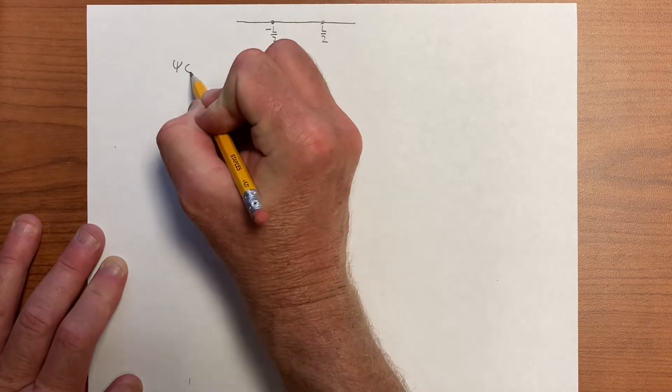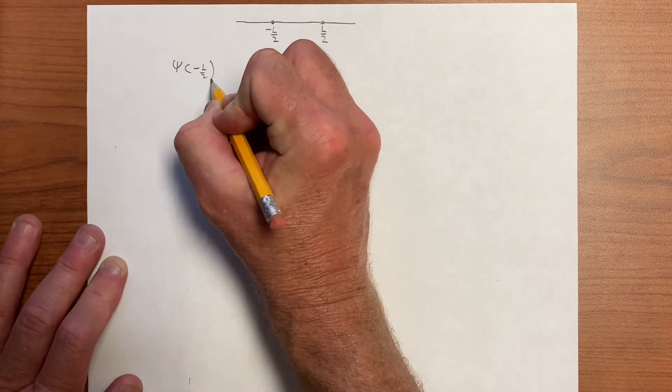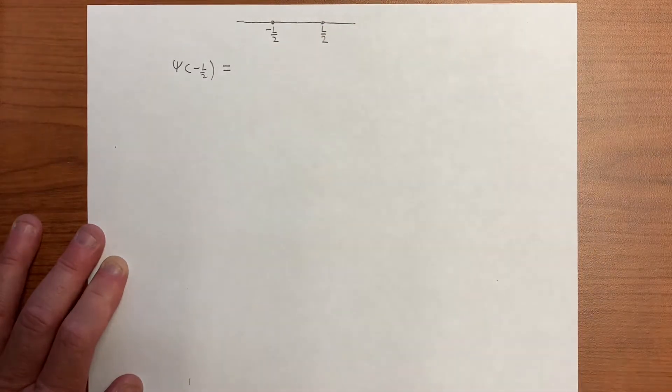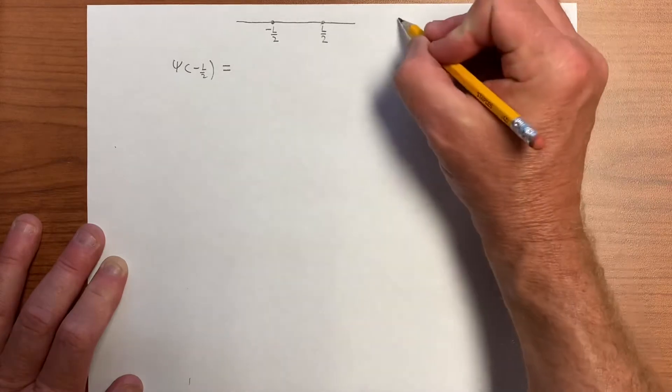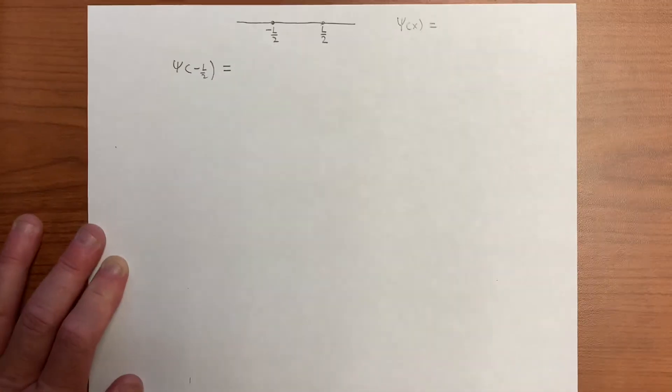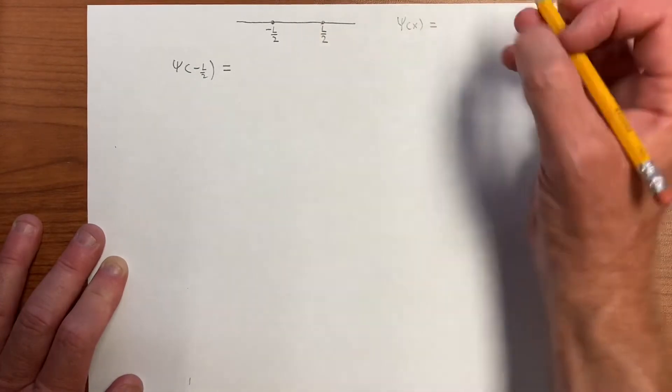That same idea has to apply here, except we now have psi of x equals minus L over 2. What kind of solution do we have? Well, we no longer have any reason to eliminate the cosine function, so we have sine and cosine functions.